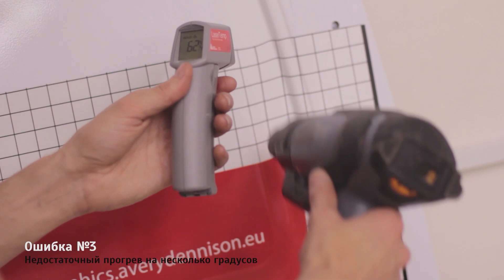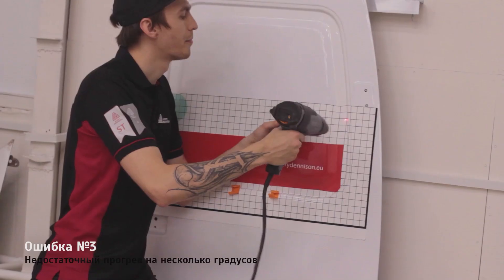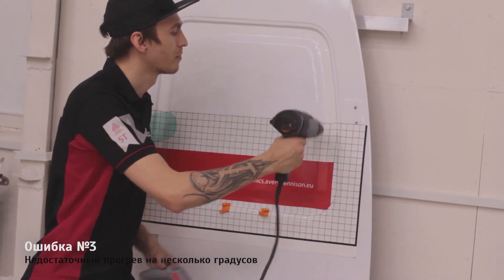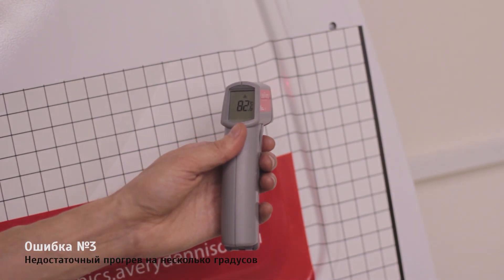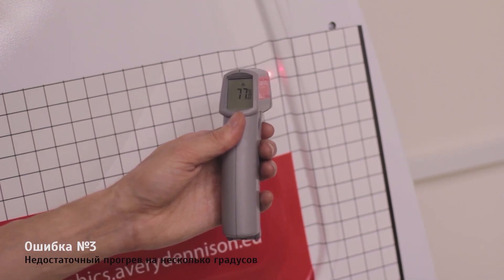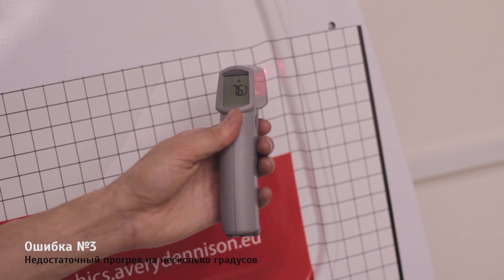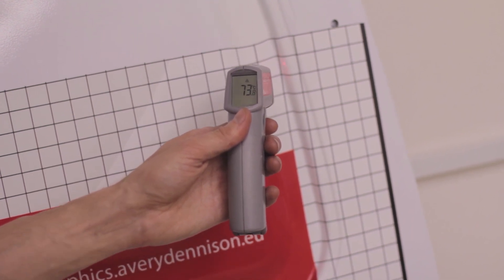Another mistake is insufficient post heating. For example, you need to post heat to 85 degrees. If you only achieve 82 or 80, so 5 degrees less, it may be a critical mistake that potentially can be the reason for vinyl lifting or popping up in this area.